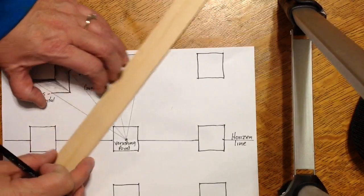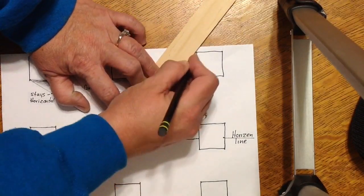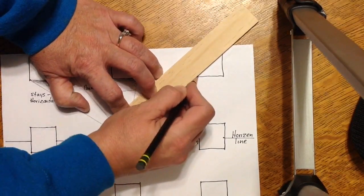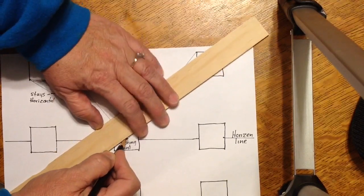Now on this other corner, again, vanishing point to each of the three corners closest to the vanishing point. Using your straight edge, matching things up, make sure they're correct.